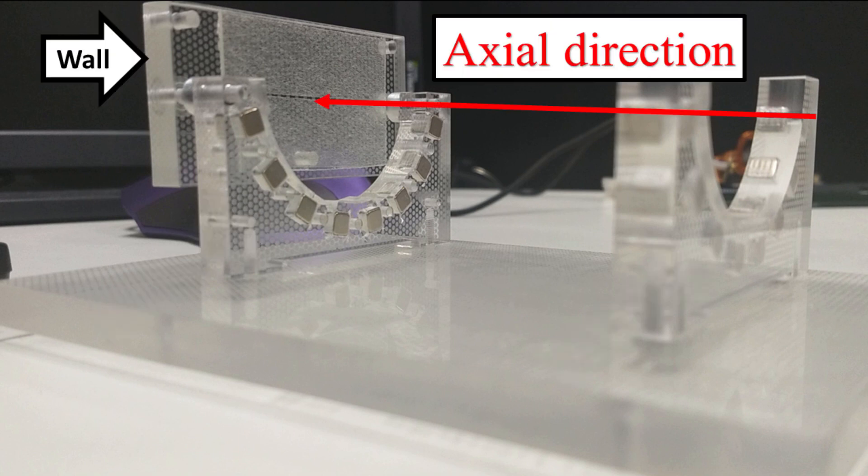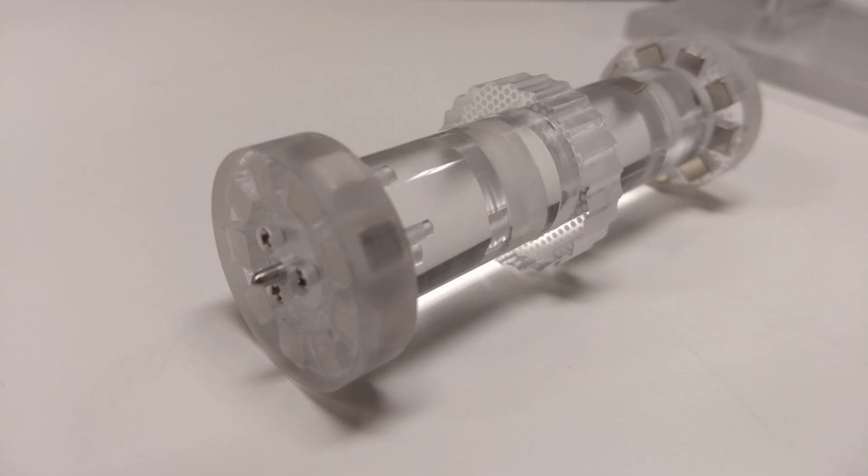There is also a wall in the front side that constrains movement in the axial direction. Now, let's take a closer look at the rotating axis.